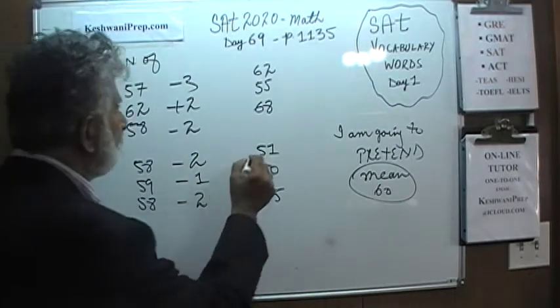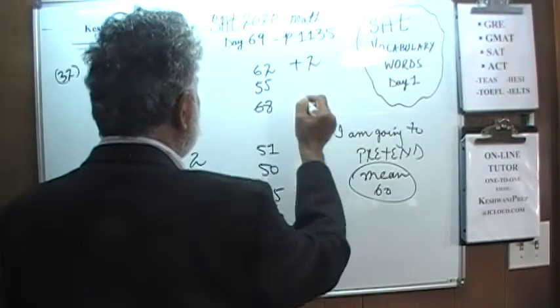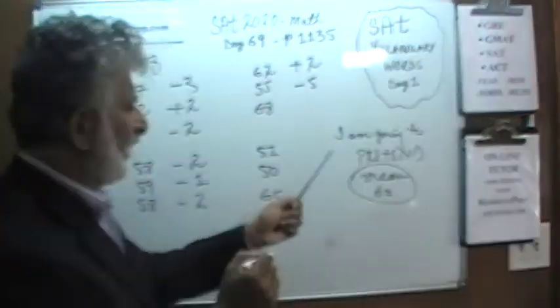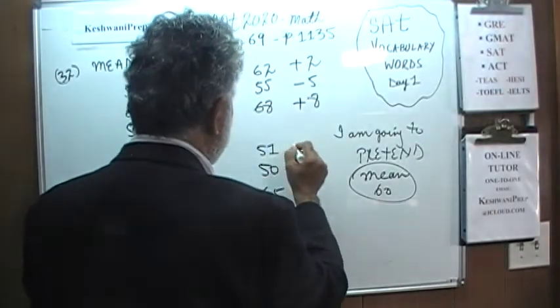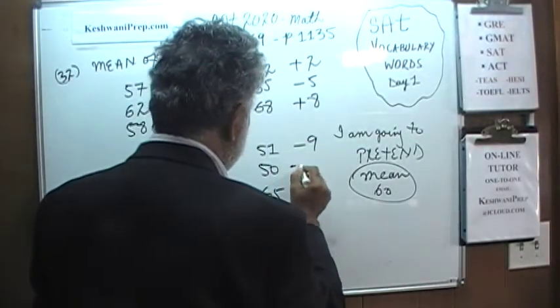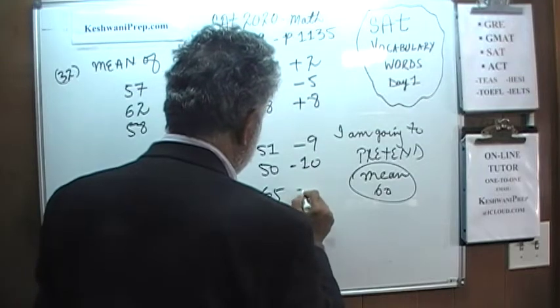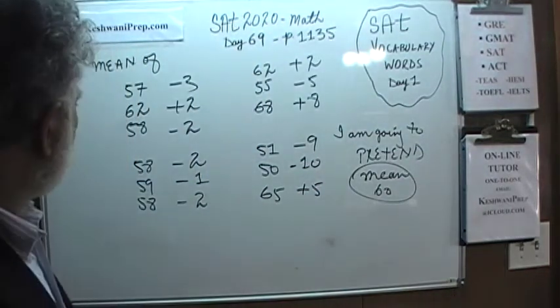Here we see a deficit of 1. A deficit of 2. A deficit of 2. A deficit of 1. A deficit of 2. I see a surplus of 2. A deficit of 5. Because 55 is 5 less than 60. Here we have a surplus of 8. Here we have a deficit of 9. A deficit of 10. And a surplus of 5.